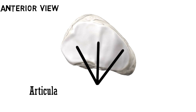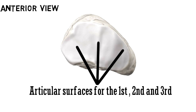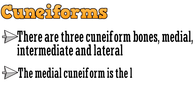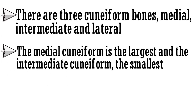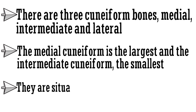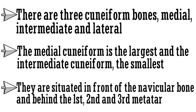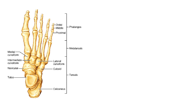Let's have a look. This is the anterior view of the navicular bone. These three surfaces are the articular surfaces for the first, second, and third cuneiform bones. The next tarsal bones are the cuneiforms. There are three cuneiform bones: medial, intermediate, and lateral. The medial cuneiform is the largest and the intermediate cuneiform is the smallest. They are situated in front of the navicular bone and behind the first, second, and third metatarsal bones. In this image, you can see these three bones are the cuneiforms, situated behind the metatarsals and in front of the navicular.